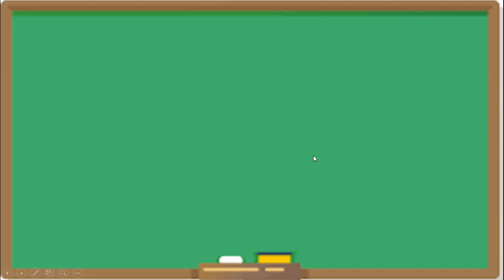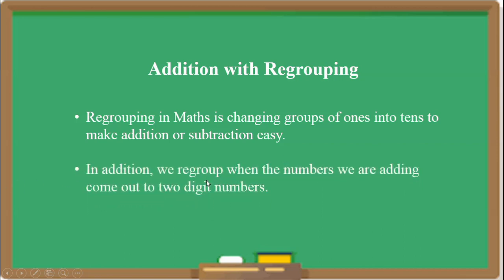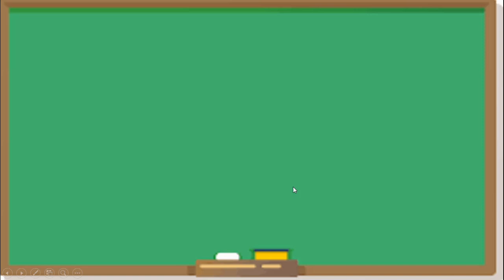Now, children, we will see addition with regrouping. What is addition with regrouping? Regrouping in maths is changing groups of 1's into 10's to make addition or subtraction easy. In addition, we regroup when the numbers we are adding come out to a two-digit number. We will see this with an example.